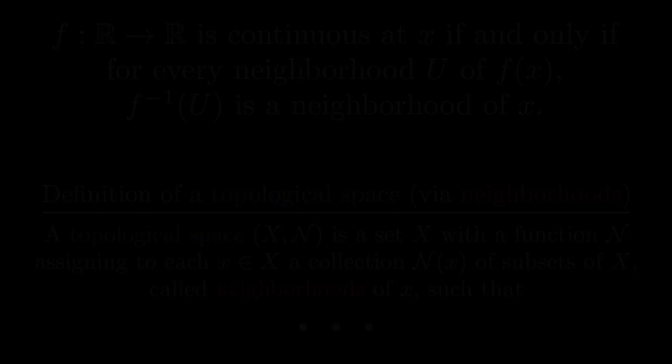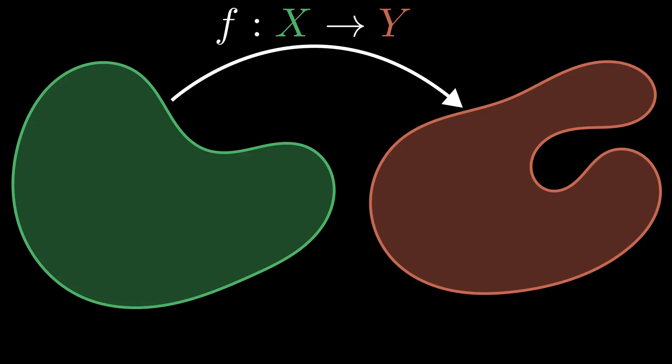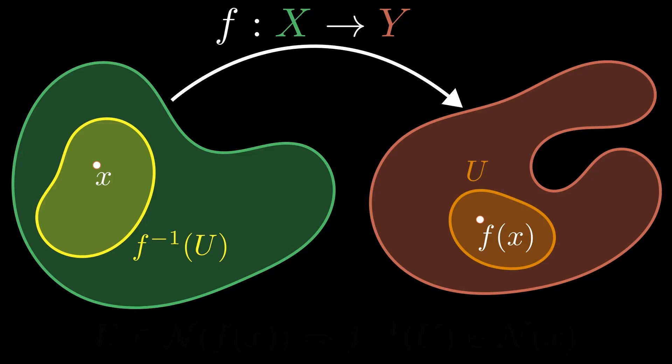Before we get there, let's describe what it means for a function between topological spaces to be continuous at a point. Like in the real case, we have that f is continuous at x if for any neighborhood of f of x, the pre-image is a neighborhood of x.